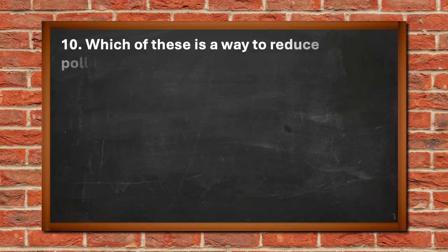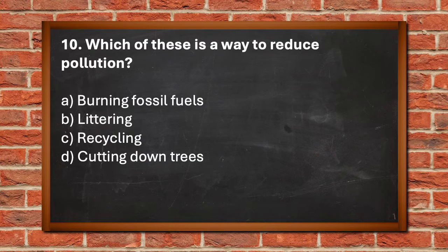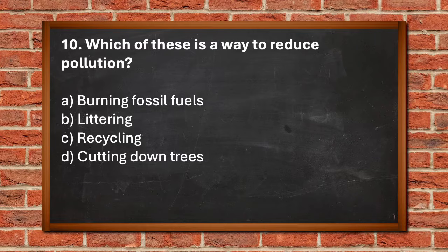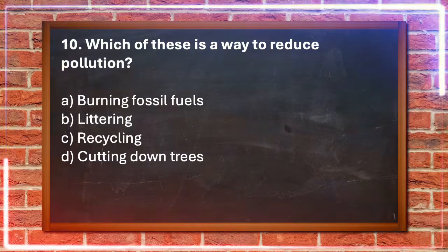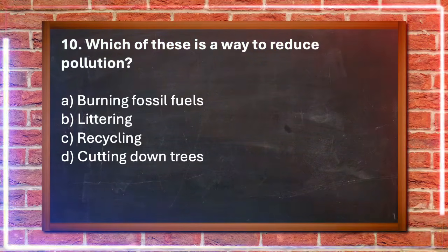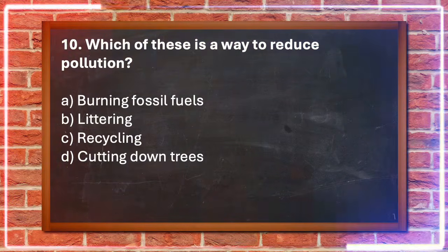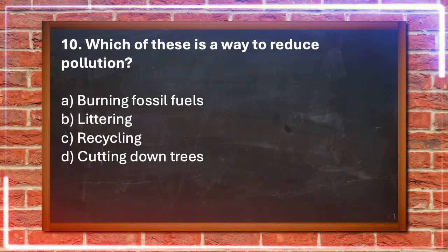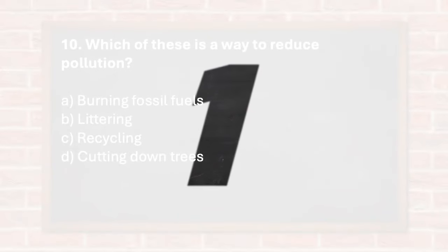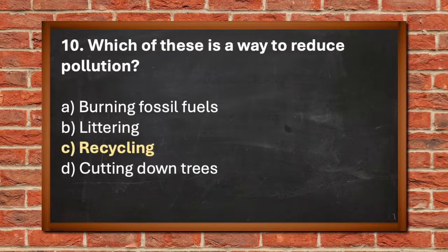Number 10. Which of these is a way to reduce pollution? A. Burning fossil fuels, B. Littering, C. Recycling, D. Cutting down trees. The answer is C. Recycling.